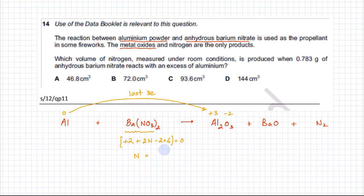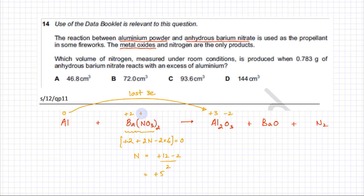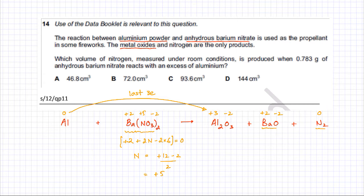N would be: minus 2 × 6 = 12, so on the other side it becomes +12, then taking 2 across gives plus 12 divided by 2 = +5. So N is +5. In barium nitrate: Ba is +2, N is +5, oxygen is −2. On the products side, in barium oxide, Ba is +2 and oxygen is −2. Nitrogen as a free neutral element has an oxidation state of exactly 0.